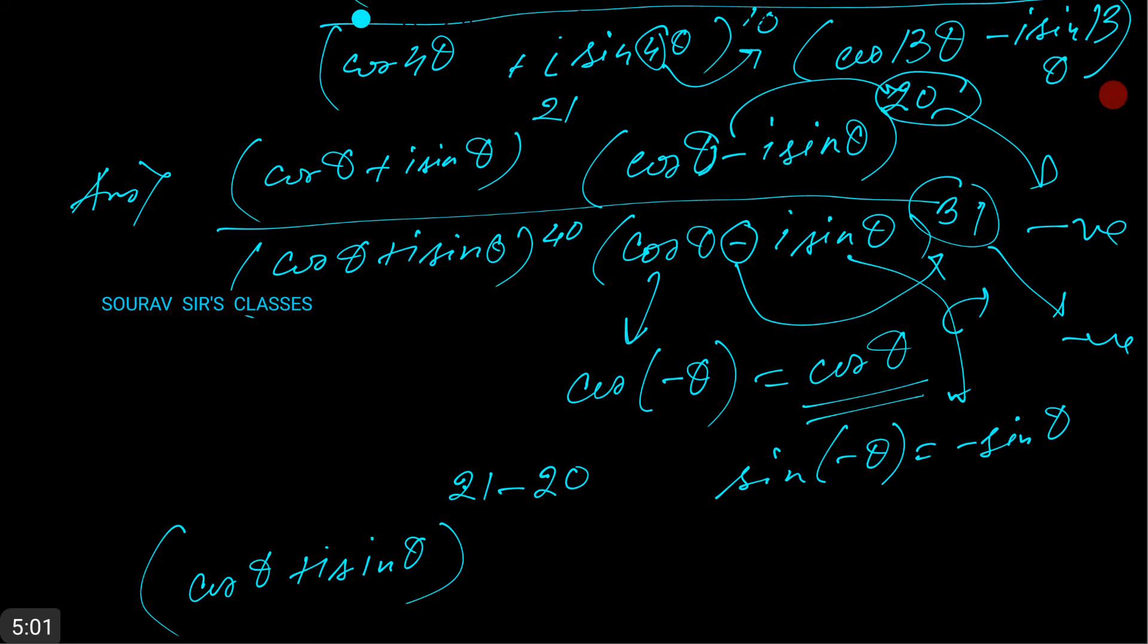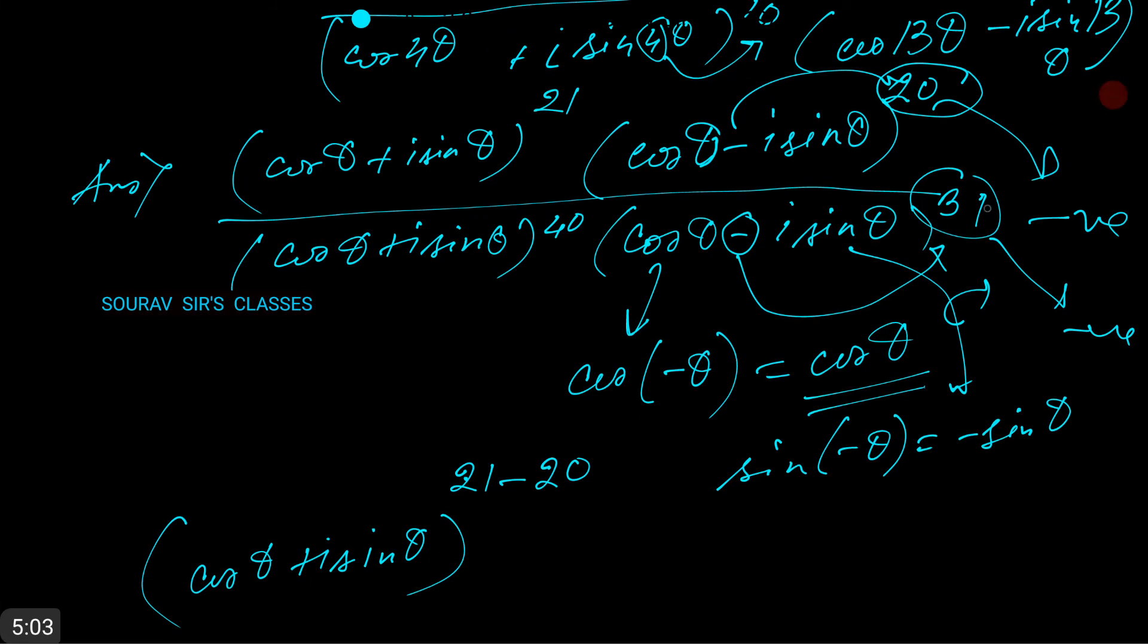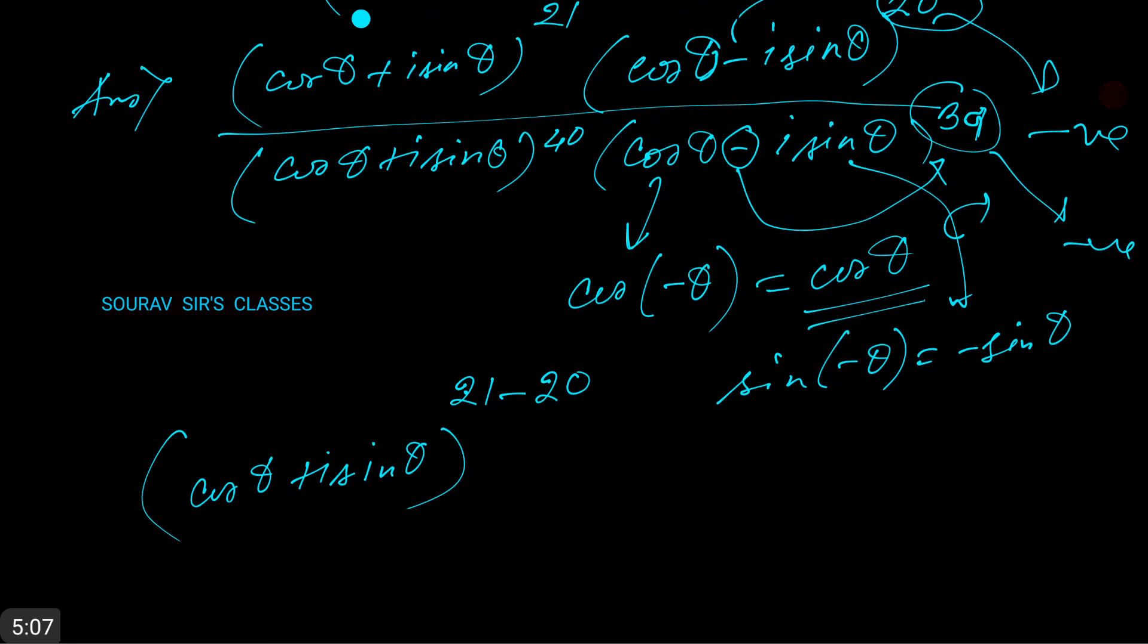we are left with -39. So this is (cos θ + i sin θ) to the power (40 - 39), which gives us (cos θ + i sin θ)^1.